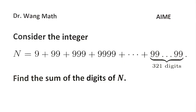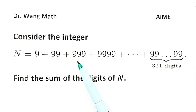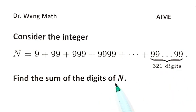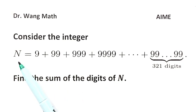In this video, let's solve a problem. Consider integer n equals 9 plus 99 plus 999 and so on up to 321 nines, then find the sum of digits of n. First, determine the value of n, then calculate the sum of the digits.